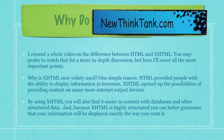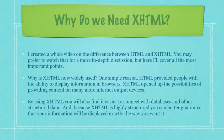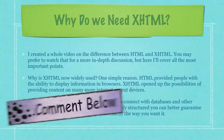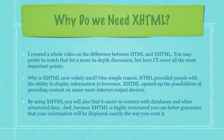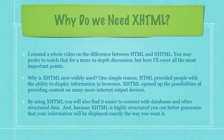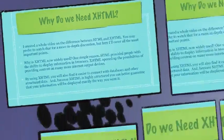So why do we need XHTML? I created a whole video on the difference between HTML and XHTML — you may prefer to watch that for a more in-depth discussion, but here I'll cover all of the most important points. XHTML is now widely used for one simple reason: HTML provided people with the ability to display information in browsers, but XHTML opened up the possibilities of providing content on many more internet output devices. By using XHTML, you will also find it easier to connect with databases and other structured data. And because XHTML is highly structured, you can better guarantee that your information will be displayed exactly the way you want it.